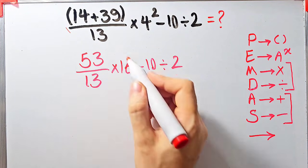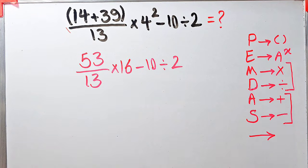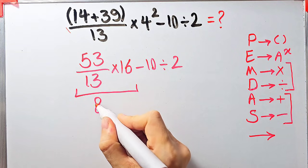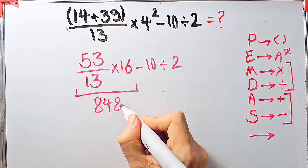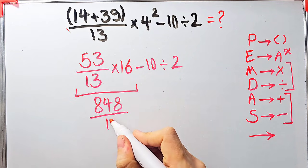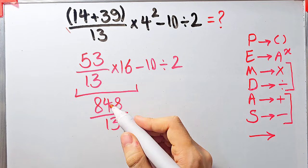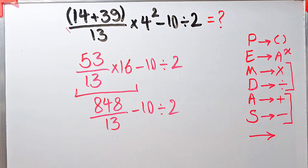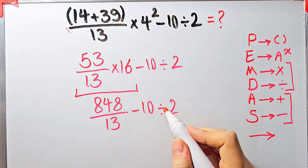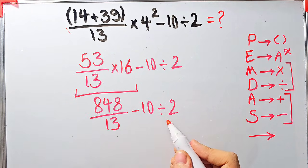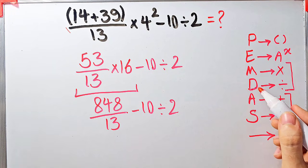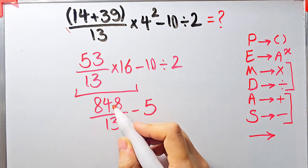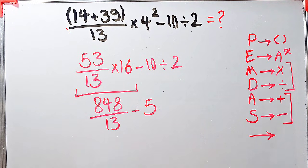Now we have multiplication, subtraction, and division. In this step we simplify the multiplication: 53 over 13 times 16. The question is now 848 over 13, minus 10 divided by 2. In this step we have subtraction and division. First we simplify the division because division has higher priority than subtraction. Negative 10 divided by 2 equals negative 5. Now we have 848 over 13 minus 5.